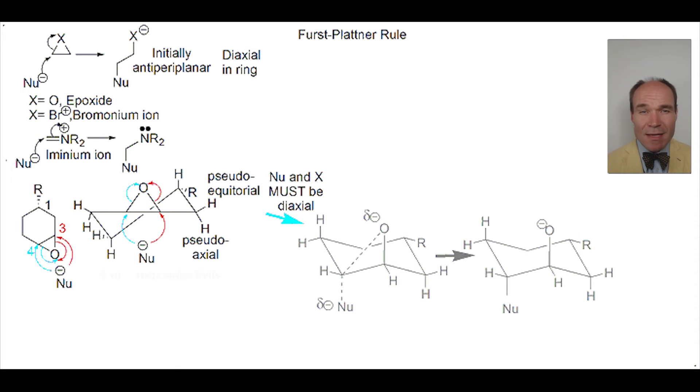We are making a regioselective choice between nucleophilic attack at carbons 3 and 4. So, what about the other option where the nucleophile attacks carbon 3 with the same chair conformation?